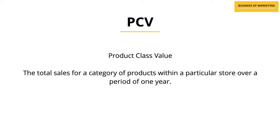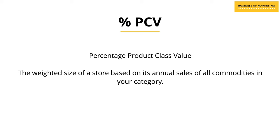This is where the next measure comes in: Product Class Value, or PCV. Unlike ACV — which is the total sales of all products in a store — PCV is the total sales of a particular category of products within a store in one year. Stores where sales for your category are higher are more important to you than stores where category sales are lower. This leads to the next concept: percentage PCV, which is the weighted size of a store based on the annual sales of all commodities in your specific category.